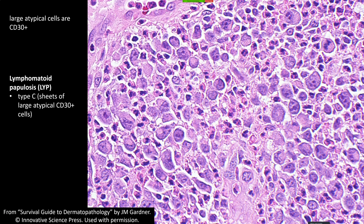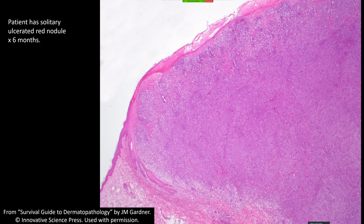It has to have that proper clinical behavior, and sometimes at the beginning we don't know how it's going to behave. This is why we use 'CD30-positive T-cell lymphoproliferative disorder' to encompass these things — it often takes follow-up to find out what it's actually going to be. These sheets of ugly CD30-positive large atypical cells are Type C. Type B is supposed to look like mycosis fungoides microscopically with an epidermotropic pattern, but I've not seen a good example of that in my practice.